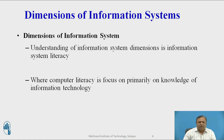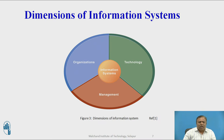Dimensions of information system: understanding information system dimensions is part of information system literacy, whereas computer literacy is focused primarily on knowledge of information technology. Management information systems deal with behavioral and technical issues surrounding the development, use, and impact of information systems in the firm. Using information systems effectively requires an understanding of organization, management, and information technology. The three dimensions shown in the figure are: organizations, technology, and management — with information system at the center.